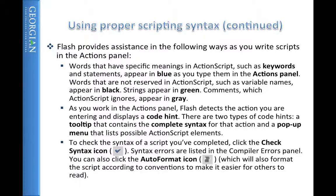Keywords are highlighted and appear in blue in the Actions panel. In Flash Builder and Flash Develop they'll have other colors you can customize. Variable names appear in black, strings appear green, and commented code appears in gray. You can check the syntax of your lines in the Actions panel by clicking the syntax icon.